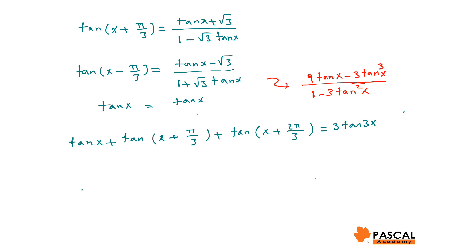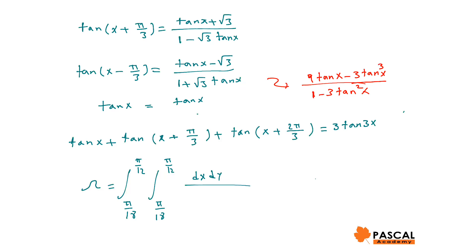Therefore, omega can be written as the integral from pi over 18 to pi over 12, integral from pi over 18 to pi over 12, of dx dy over tan(3y).